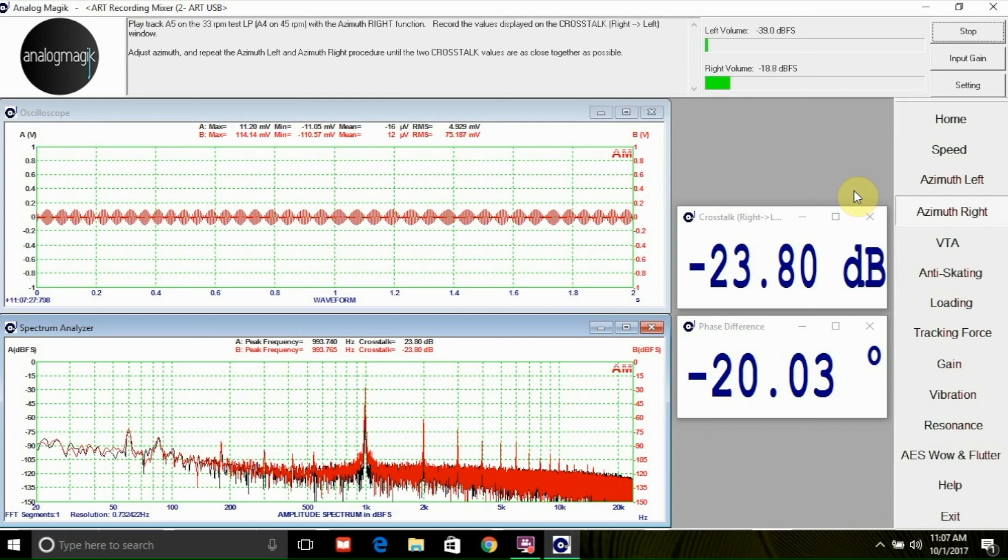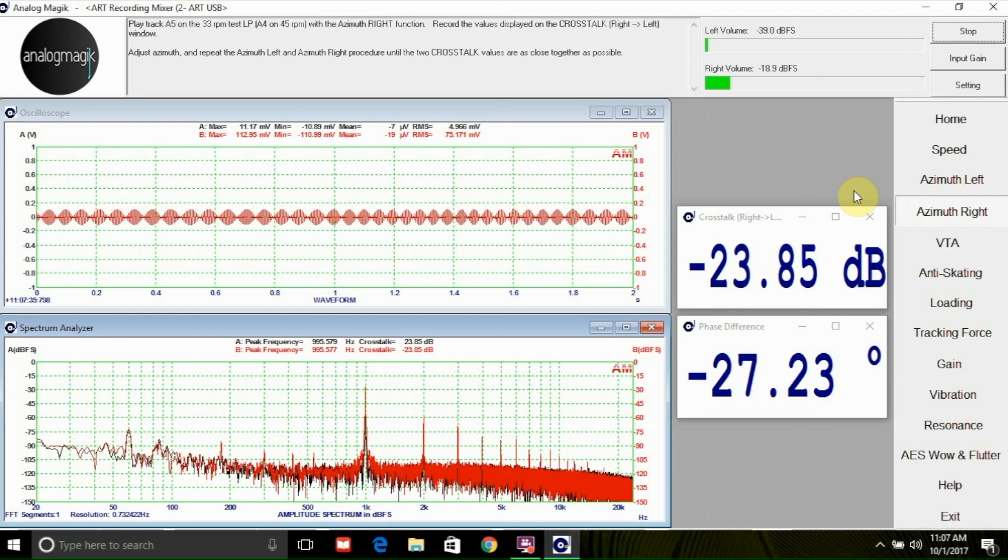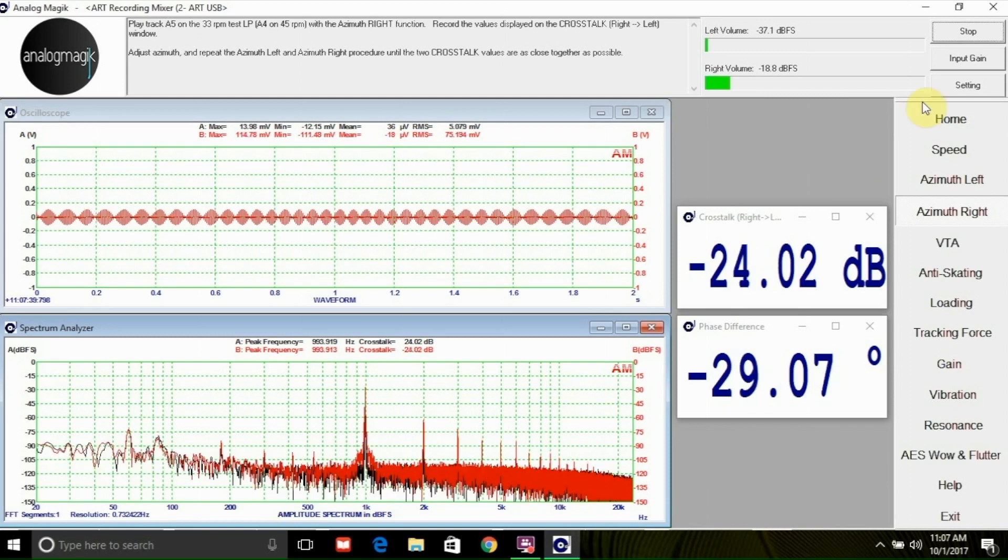All cartridges will have some inherent crosstalk between channels, but higher quality cartridges usually have a lower level of crosstalk. On high quality cartridges, you can achieve a crosstalk number of within 0.5 decibels between channels.